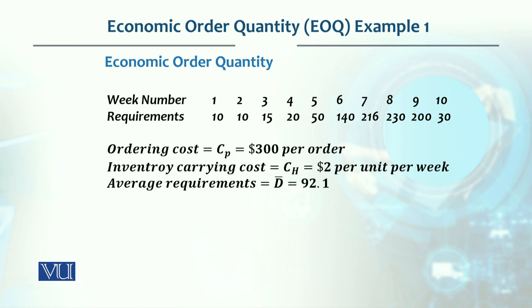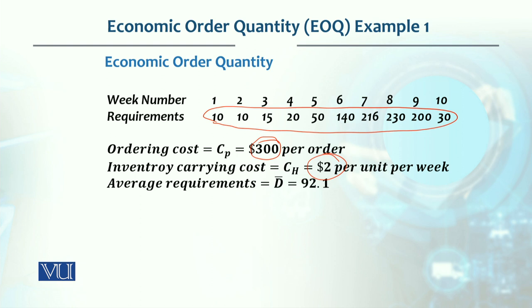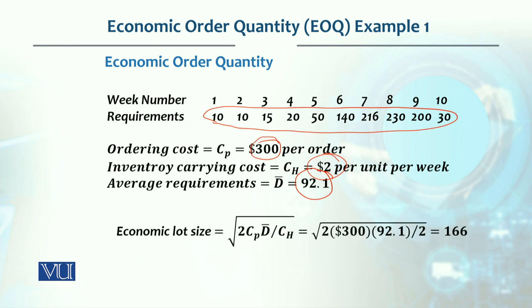The data provided is the same as our first example, lot for lot, so that comparison is very clear. We have 10 weeks, each week has a requirement of quantity, and ordering cost is $300 per order. Inventory carrying cost is $2 per unit per week, and the average requirement is 10 units per week.